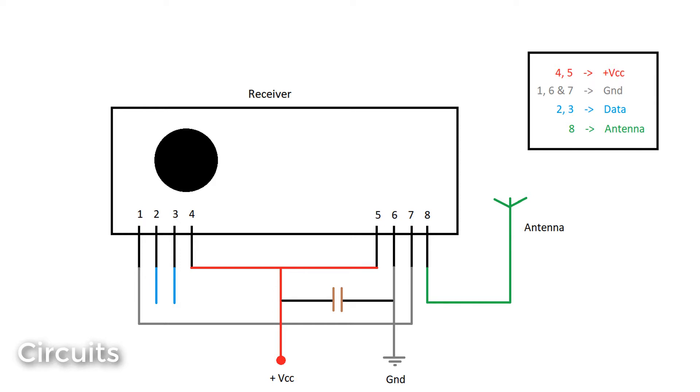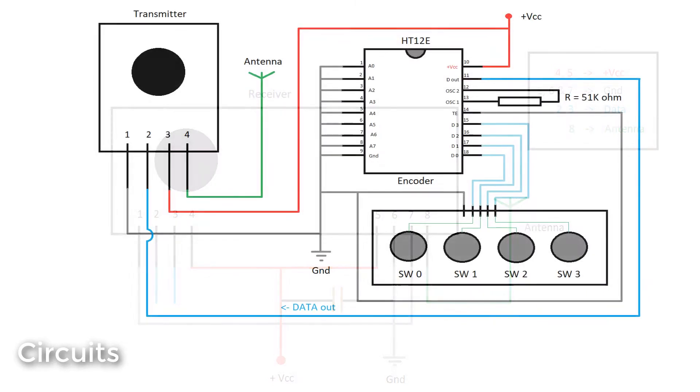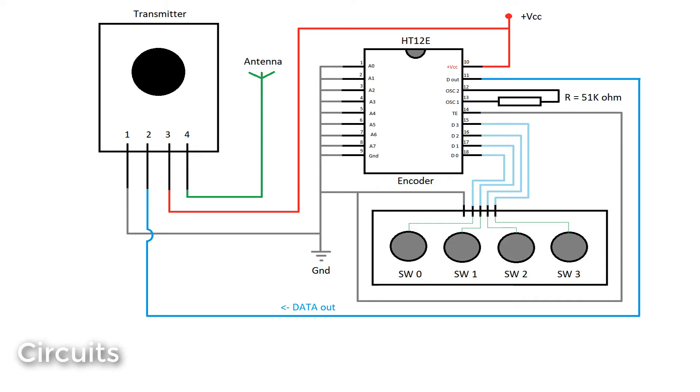Now all we need to do is connect your transmitter to the encoder circuit. The encoder circuit helps you transmit multiple data. In this circuit, you have to connect the data pin of the transmitter to the 11th pin of the encoder. Make sure the 14th pin of the encoder is grounded and acts as a return path from your switch.